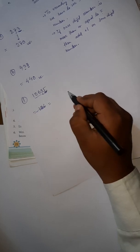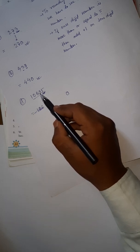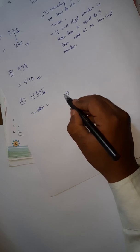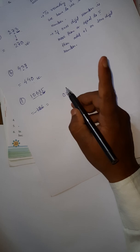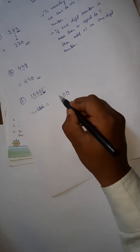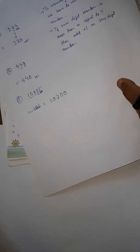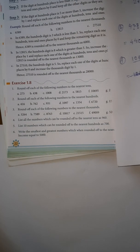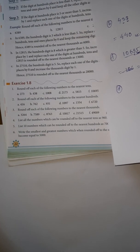Convert the ones place to 0, then add 1 to the tens digit. If you add 1 to 9, it is 9 plus 1 equals 10 — so write 0 and carry 1. Then carry 1 plus 6 is 7. So 10695 rounded to nearest ten is 10700.